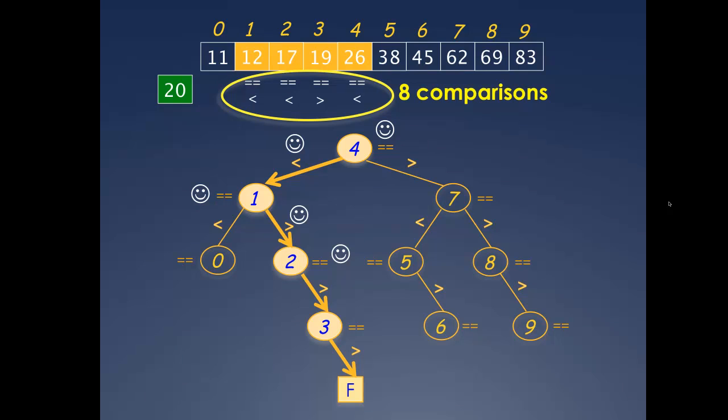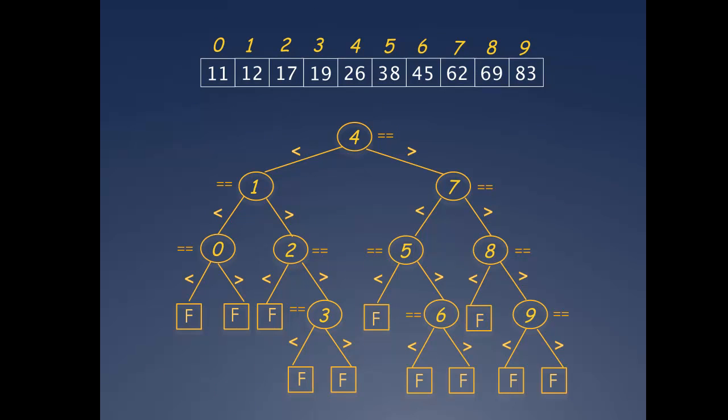Observe that every failure node is reached after one comparison after the preceding success node. You may have also figured out that the count of comparisons for any success node is always an odd number, which means the count of comparisons for every failure node is always an even number. So back to our original question.